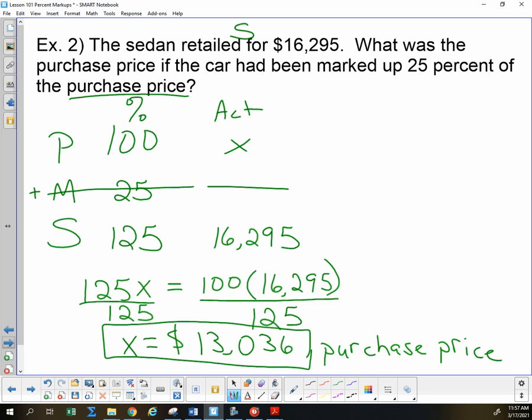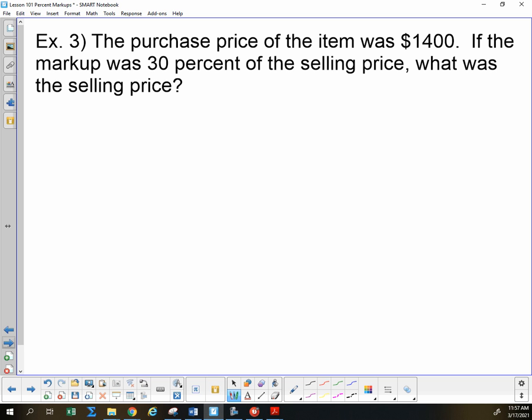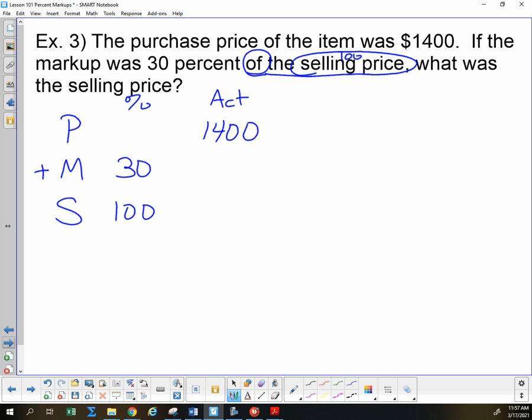Next one's going to be a little bit tricky. Purchase price is $1,400. It is still always true that P plus M equals S. They're telling us actual over here, actual purchase is $1,400. The markup is 30%. But here's what's tricky. This time it is of the selling. So the selling has to be 100. So purchase percent plus 30 is 100 means purchase percent had to be 70%. And then we want to know the actual selling price. So I pick a letter and put in there.